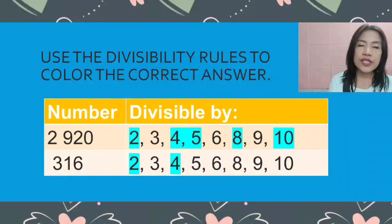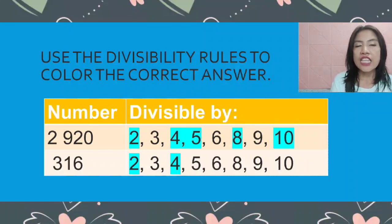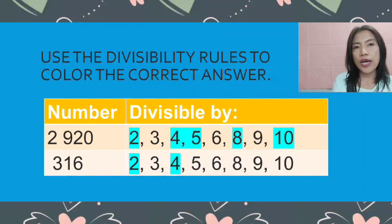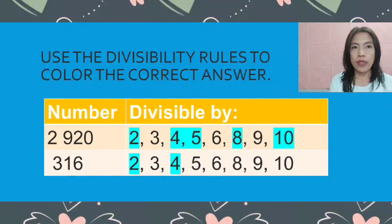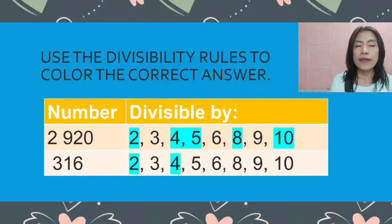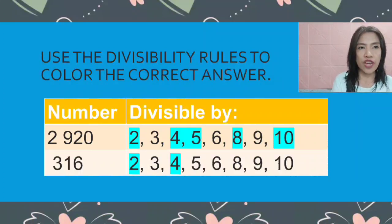For 316: divisible by 2 because the last digit is an even number. Not divisible by 3 because 3 plus 1 plus 6 equals 10, and 10 divided by 3 gives 3 remainder 1. It is divisible by 4, but not divisible by 5 because the last digit is 6, not 0 or 5. It is not divisible by the other numbers either.